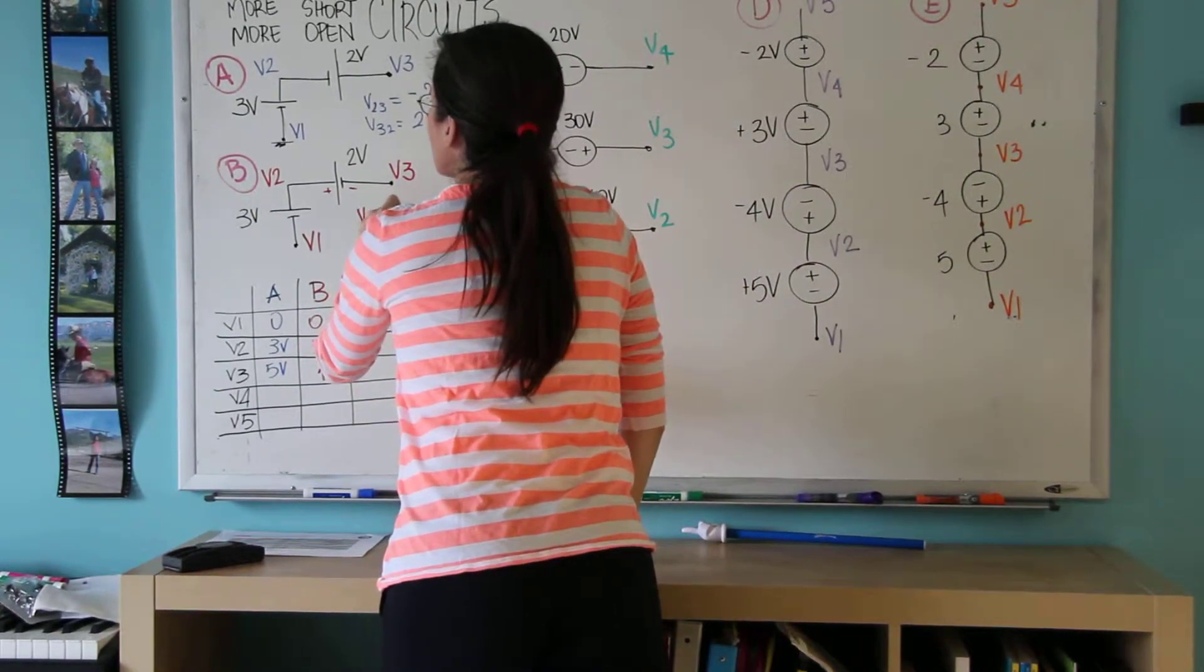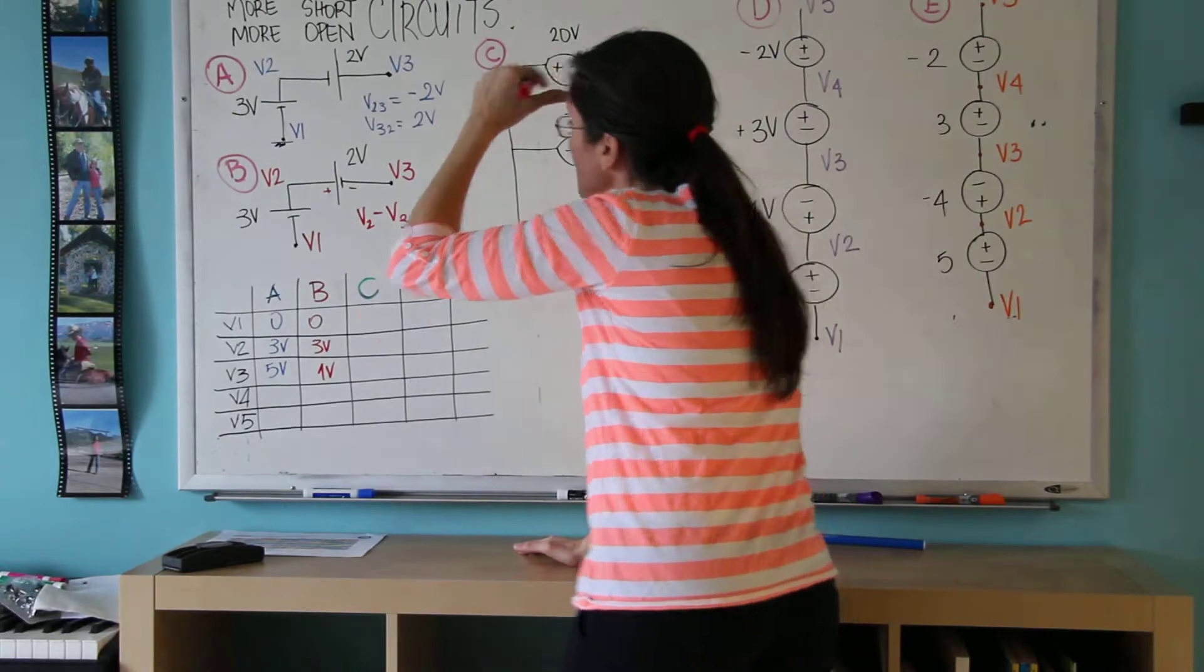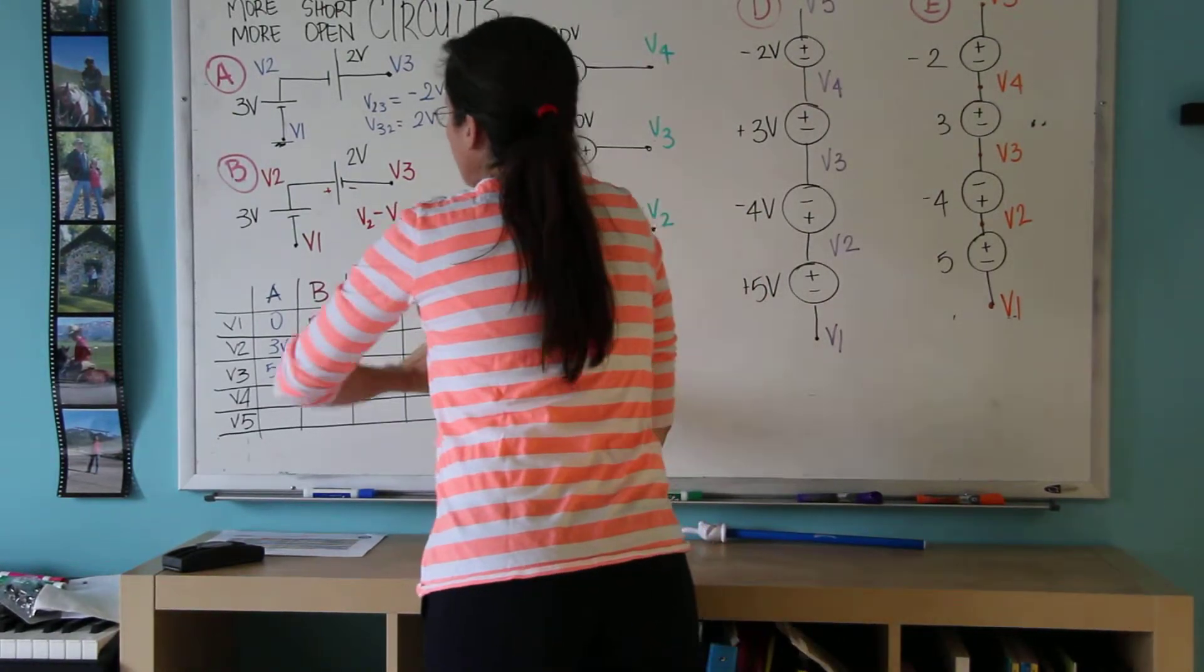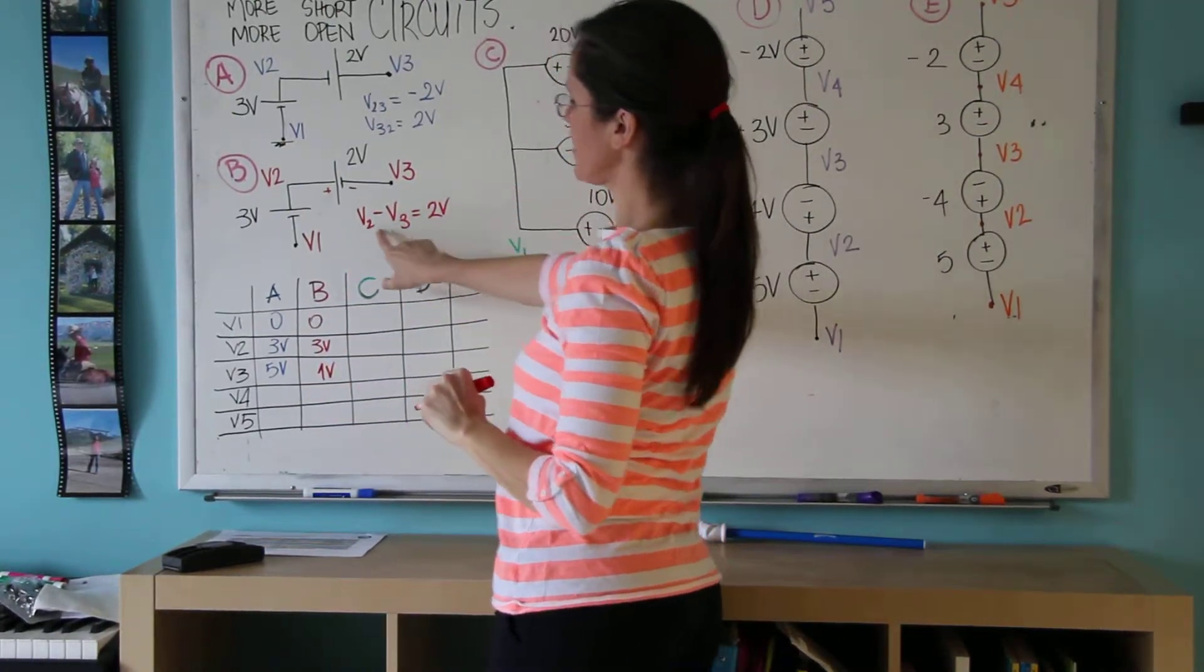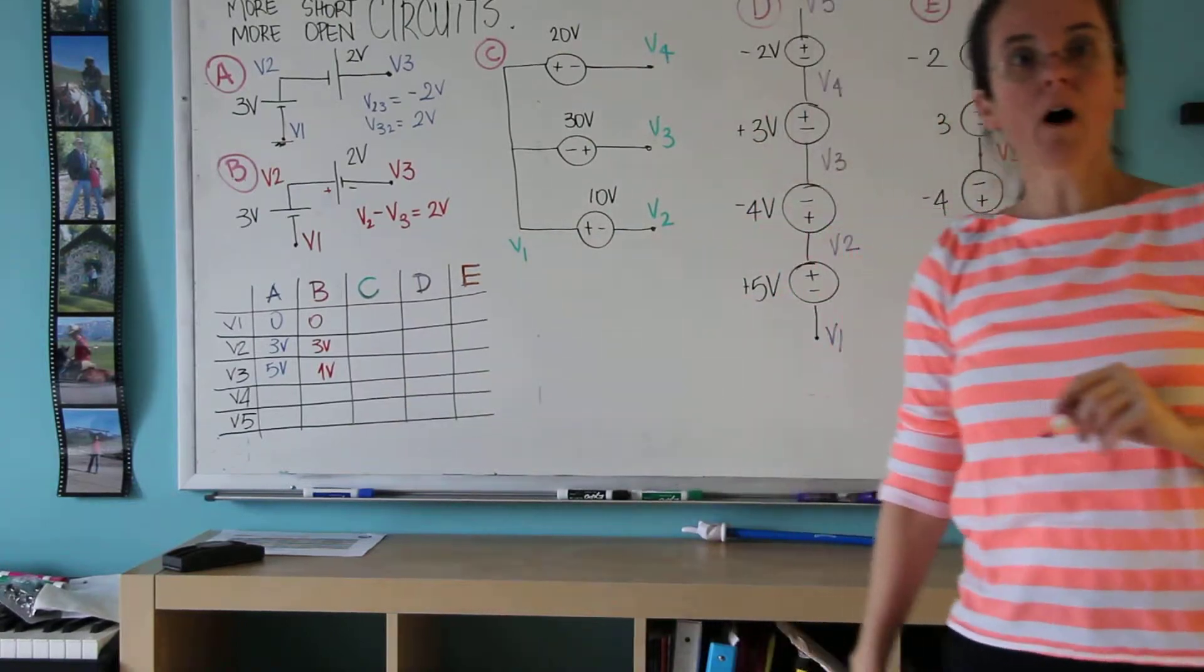And here's the deal, V2 minus V3 equals 2 volts. And if I knew that V2 was 3, this guy needs to be a 1.